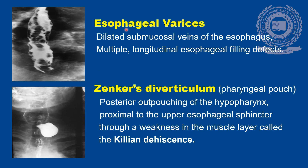Esophageal varices refers to dilated submucosal veins of the esophagus. On barium swallow study, there are multiple longitudinal esophageal filling defects, which is the typical appearance of varices. Zenker's diverticulum, also known as pharyngeal pouch, involves a posterior outpouching of the hypopharynx proximal to the upper esophageal sphincter through a weakness in the muscle layer called Killian's dehiscence.